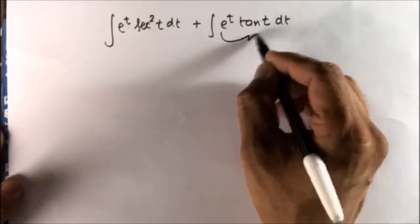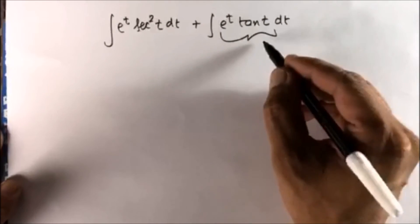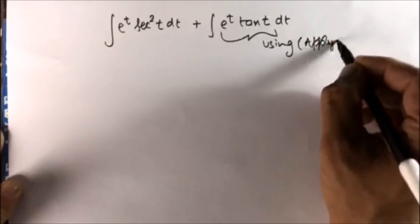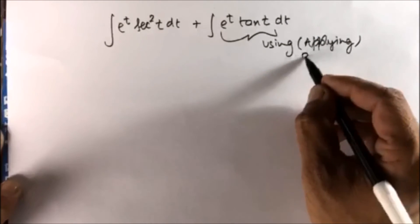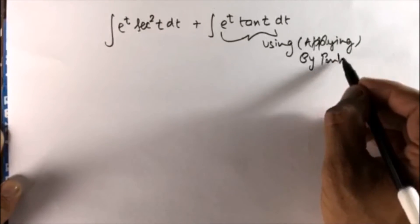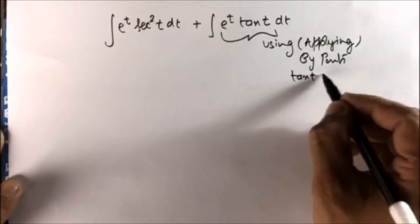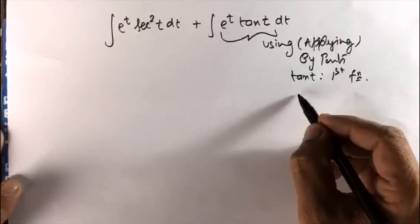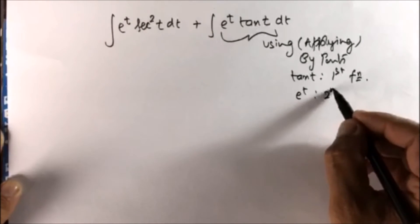So we'll be applying by parts in this part using or applying by parts by taking tan t as first function and e to the power t as second function.